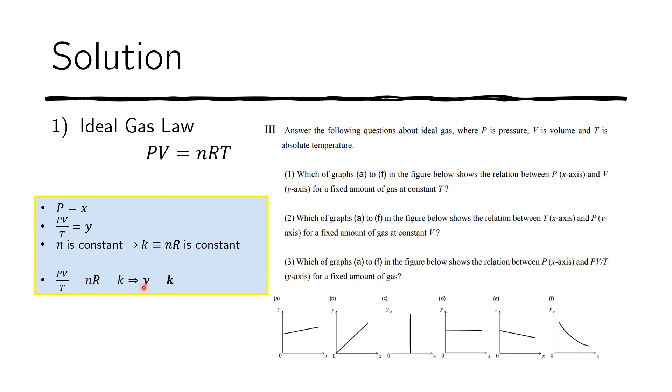So what we get is a constant function, y equals k. And again, that's just a flat line on the xy plane. And that flat horizontal line is actually this bit. And so the answer to this question is this.